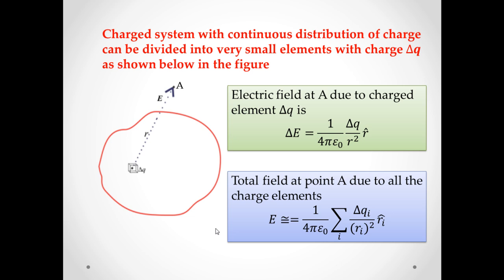Let us consider a surface of arbitrary shape and size. We now divide the continuous charge distribution into small elements containing charge delta q, as shown in this figure. Electric field at any point A due to element carrying charge delta q is given by delta E equals 1 upon 4 pi epsilon naught delta q upon r square r cap.